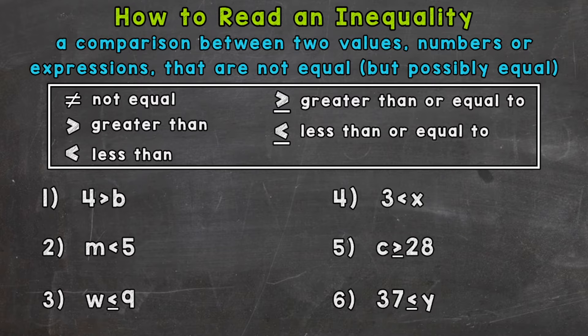So a major part of knowing how to read an inequality is knowing the symbols. The five symbols we use to represent inequalities are: not equal, greater than, less than, greater than or equal to - so that was the possibility of being equal that I was talking about - and then finally, less than or equal to. So let's go through six examples here and read these inequalities from left to right in order to get a better handle on reading these symbols and just reading inequalities in general.